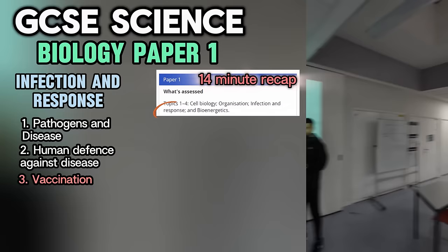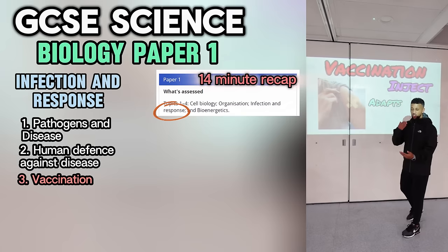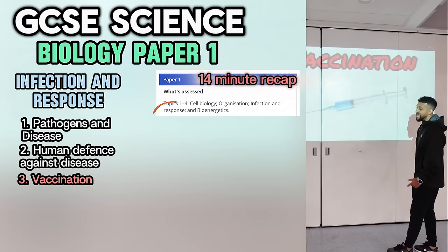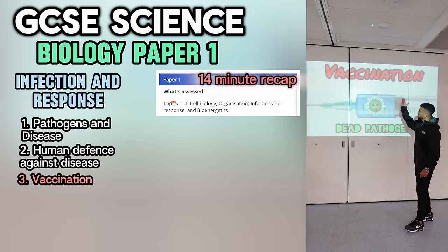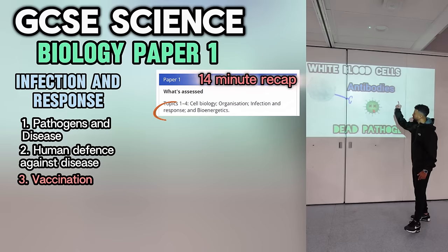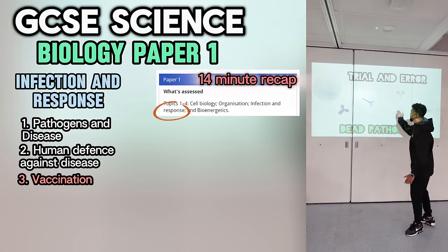Today's class is on vaccination. First you get an injection — the body adapts and you become immune. The vaccine contains a dead or inactive pathogen, so it can't harm the body. White blood cells practice making antibodies for it. If an antibody works, the white blood cells save its shape and produce it again when the real infection arrives.